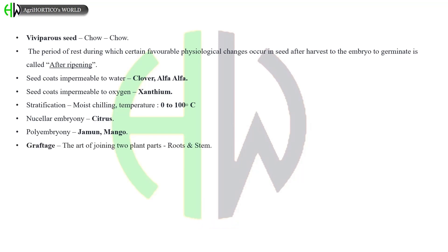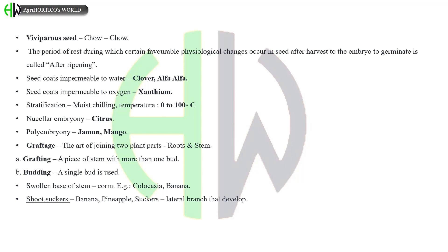Graftage is the art of joining two plant parts, that is roots and stem. Grafting is a piece of stem with more than one bud, whereas budding is a single bud is used. Swollen base of stem is corm, examples are colocasia, banana. Shoot suckers are seen in banana and in pineapple. Suckers are lateral branches that develop. Root suckers are seen in guava, curry leaf from the underground portion of the stem.